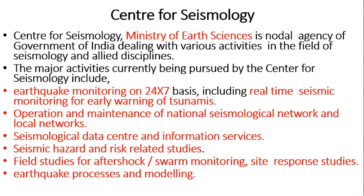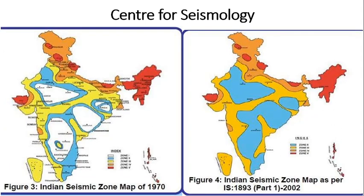The Center for Seismology works under the Ministry of Earth Sciences. It keeps records of and monitors earthquakes and related activities including volcanoes and tsunamis, and operates and maintains seismological networks locally and nationally. It also provides data center information services, seismic hazard and related studies, and field studies and earthquake process modeling. The 1970 map showed zones 1 to 5, but after 2002, a revised IS 1893 Part 1 map was published removing zone 1, leaving only zones 2 to 5.